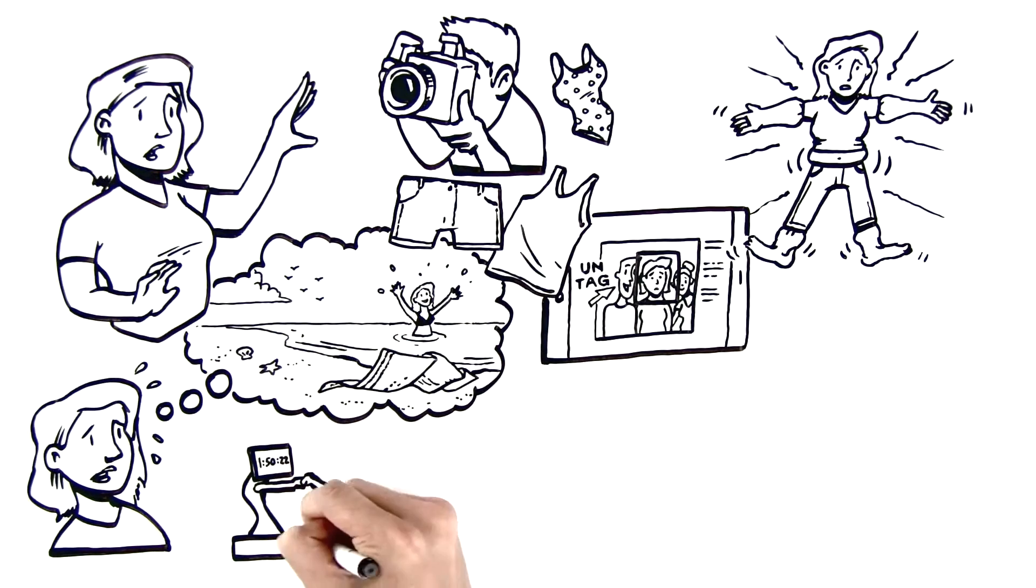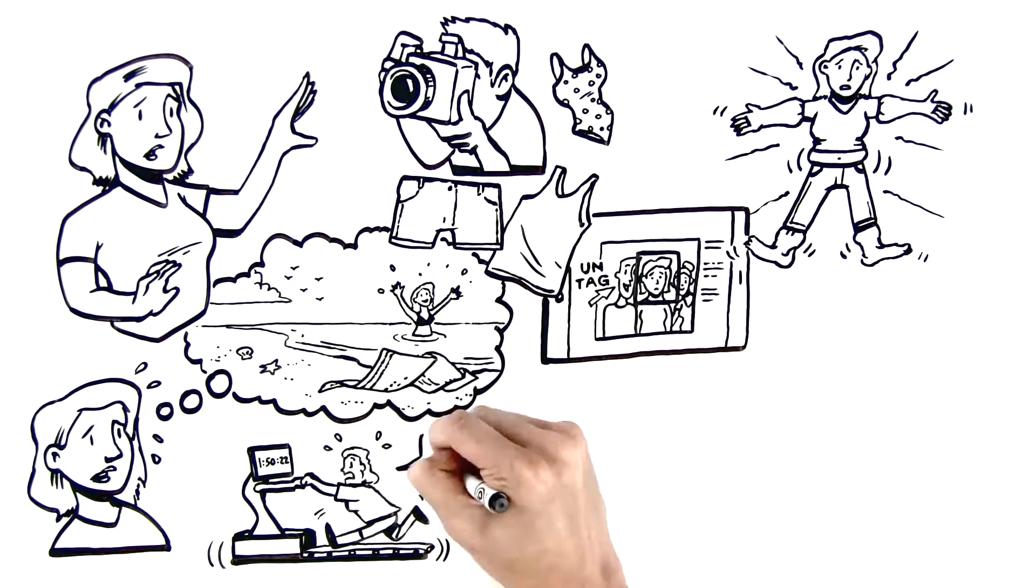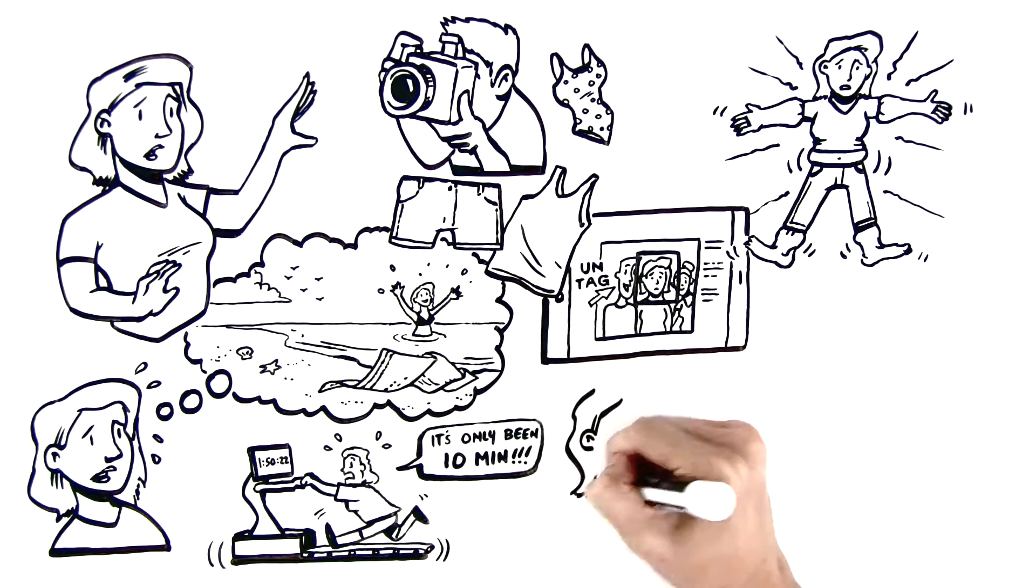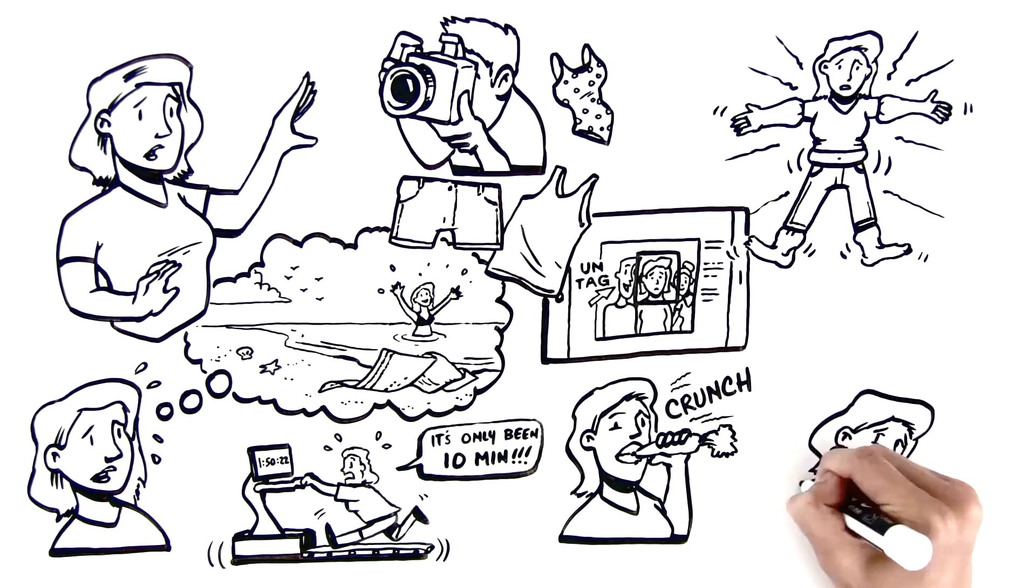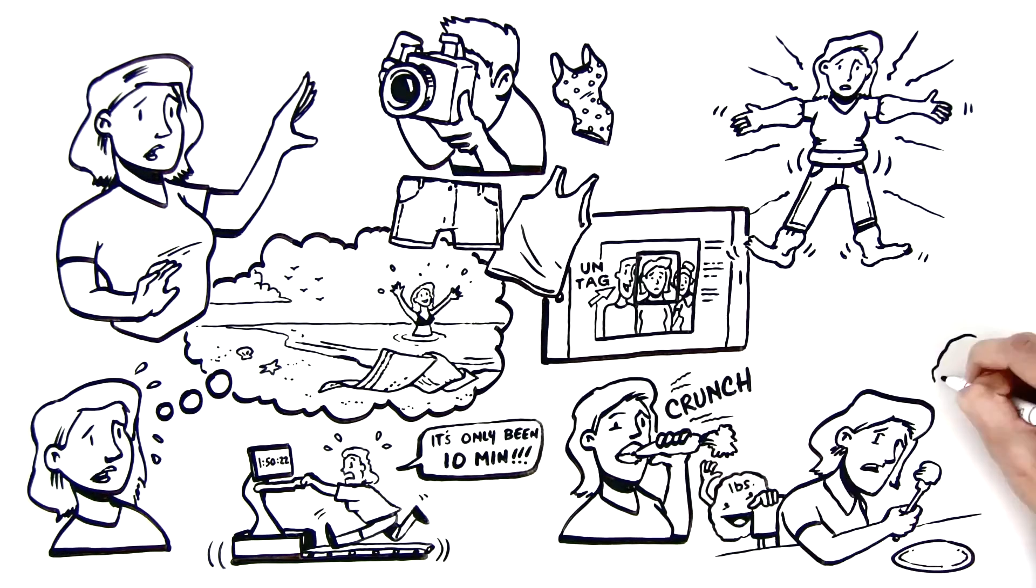But every diet program, treadmill, aerobics class, and workout routine she's tried to lose the belly fat has failed and left her frustrated. She's even resorted to grueling two-hour-long exercise routines and living on 500 calories a day. But that didn't last long. And what little weight she did lose, she quickly gained back when she went to eating normally again.